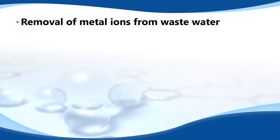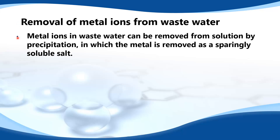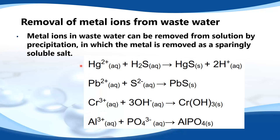In this video we look at the removal of metal ions from wastewater and also the solubility product constant. Metal ions in wastewater can be removed from solution by precipitation, in which the metal is removed as a sparingly soluble salt.